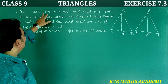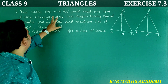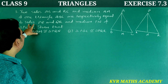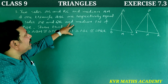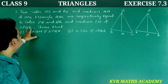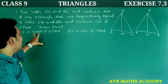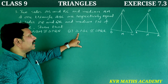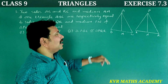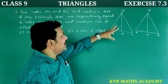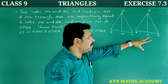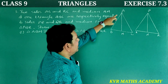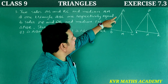Next, the third question. Two sides AB and BC and median AM of triangle ABC are respectively equal to sides PQ and QR and median PN of triangle PQR. We need to show that triangle ABM is congruent to triangle PQN, and triangle ABC is congruent to triangle PQR.